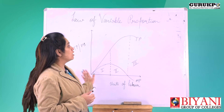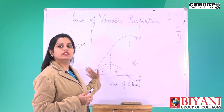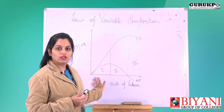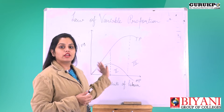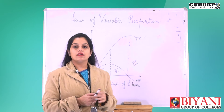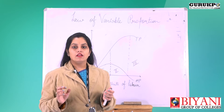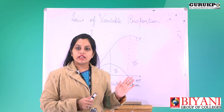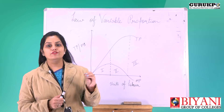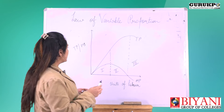Today I am going to discuss the law of variable proportion, which is the short run law of production, in which we keep some factors fixed and some variable. Before starting with the stages, I would like to discuss a few key points.